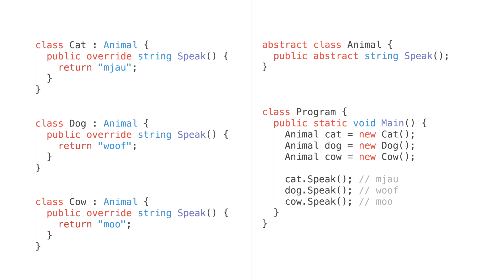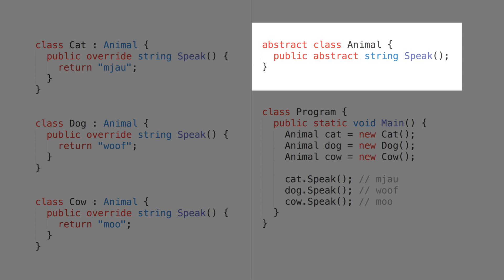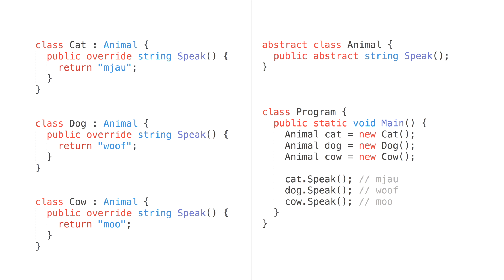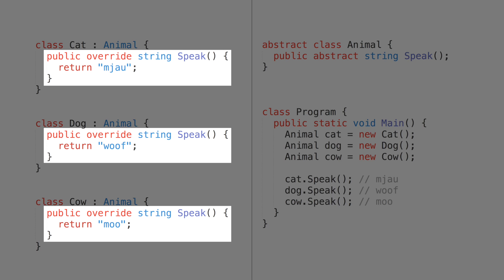I'll only talk about constructor injection because once you see how it works you'll trivially figure out parameter injection. Imagine you have a class called Animal, and a bunch of animals inheriting from it — Cat, Dog, Cow, etc. These classes have an instance method called speak, which prints some strings.